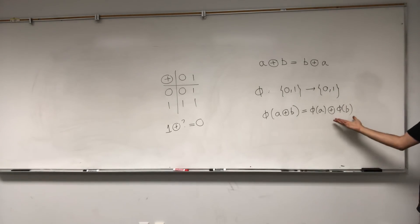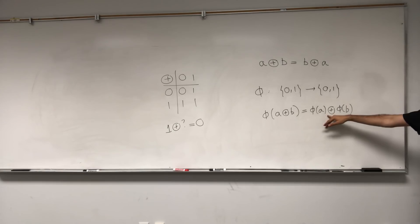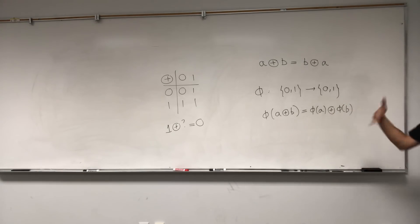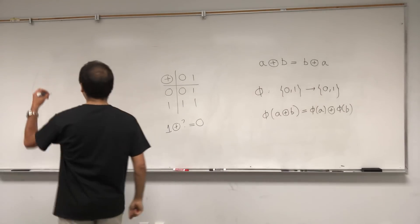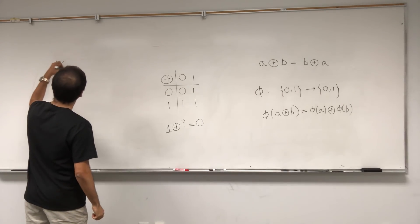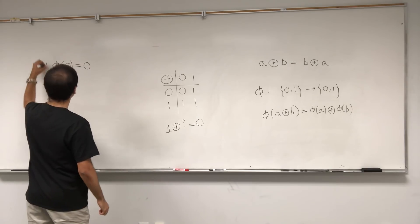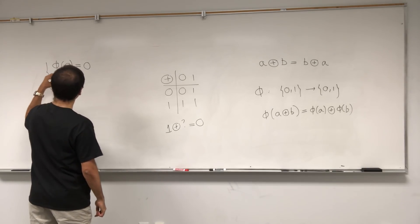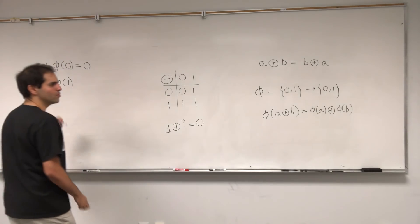So what is a lasagna homomorphism? It's any function that preserves this structure. Here are some interesting kinds of functions — there are just four types of functions from {0,1} to {0,1}.